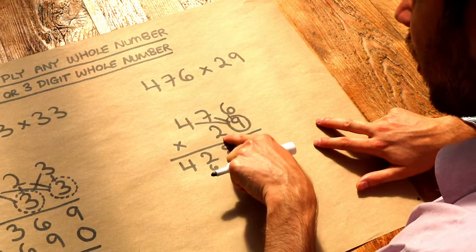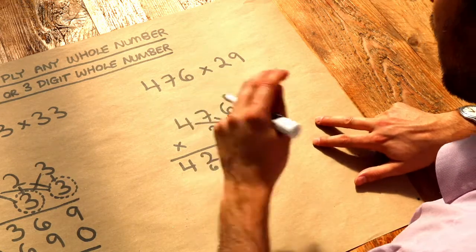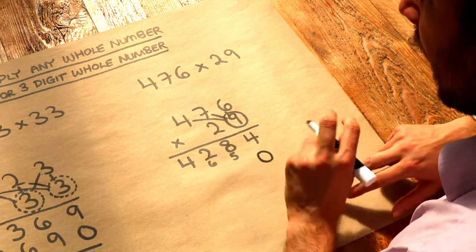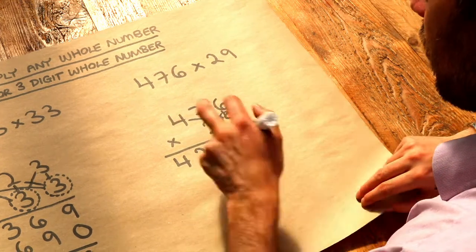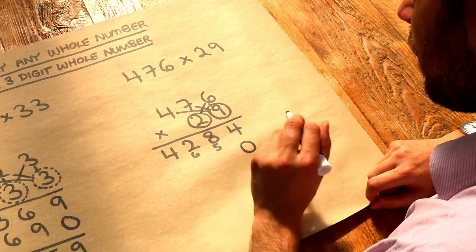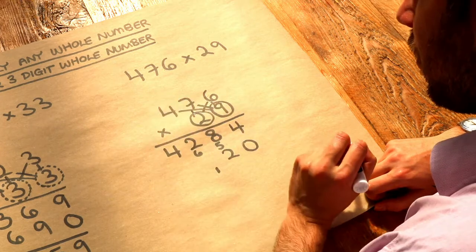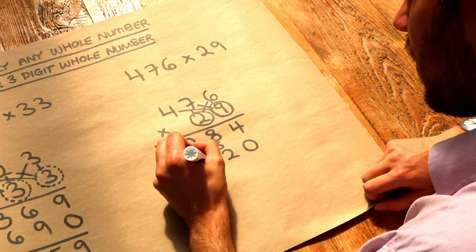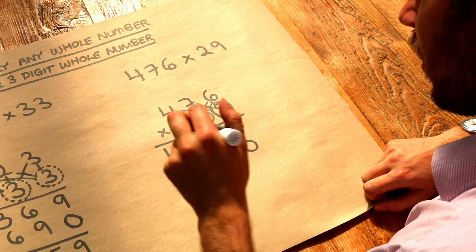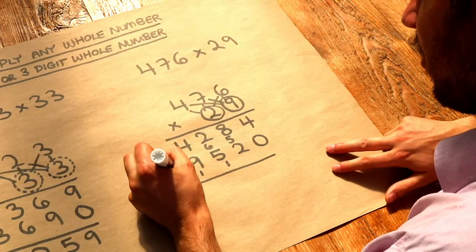Now I need to do 476 times 20. So we've got nine lots of 476 and now we want 20 lots of 476, and then we're going to add them together. Now because we're timesing by 20 we just put a zero on the end, and that allows me to just multiply this by two now. So we're going to do each of these digits at the top times by the two. So we start on the right. Six times two is 12. So we put the two, carry the one. Next we do seven times two is 14 plus the one is 15. And then we do the four times the two which is eight plus the carried one is nine.